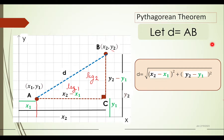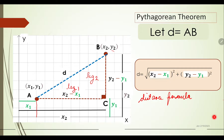Using the Pythagorean theorem, we say the distance D equals the square root of the sum of the square of one leg and the square of the other leg. The measure of the first leg is x₂ minus x₁, and the measure of the second leg is y₂ minus y₁. Thus, ladies and gentlemen, we have derived the distance formula, which works for any two given points.